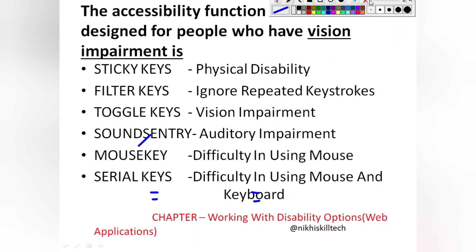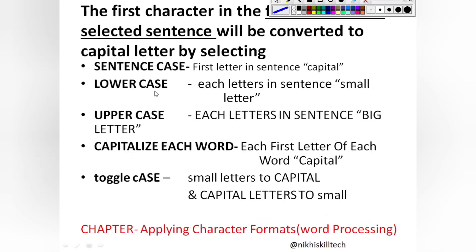In sentence case, the first letter in a sentence will be capital. In lowercase, each letter in a sentence will be in a small letter. For uppercase, each letter in a sentence will be in a big letter. Capitalize each word means the first letter of each word will be capital, and in toggle case small letters are converted to capital and capital letters are converted to small. The answer is sentence case — only the first letter of the first word in a selected sentence is converted to capital.